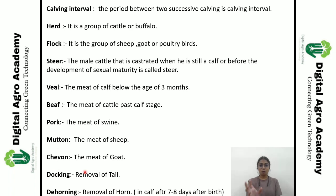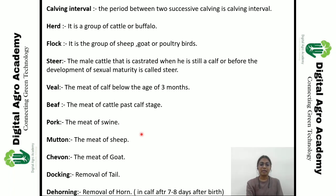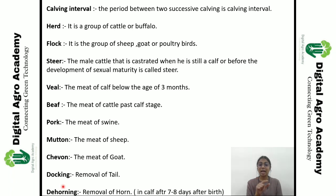What is 'docking'? The removal of the tail of cattle or buffalo is called docking. Then what is 'dehorning'? Dehorning is the removal of the horn, generally done in cattle within about 78 days of age.